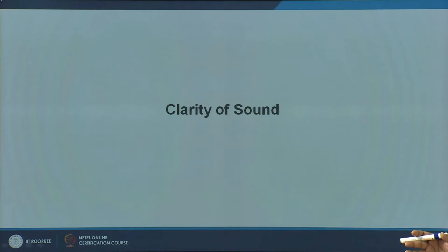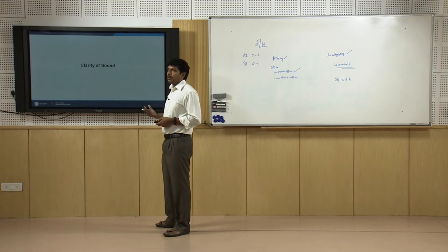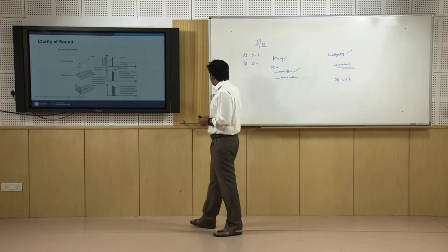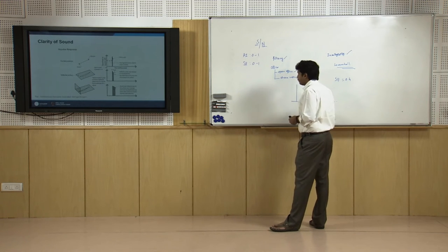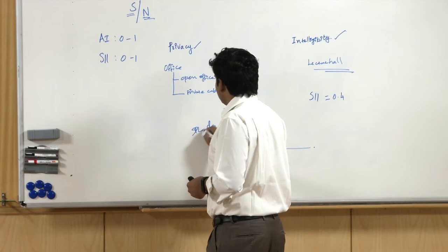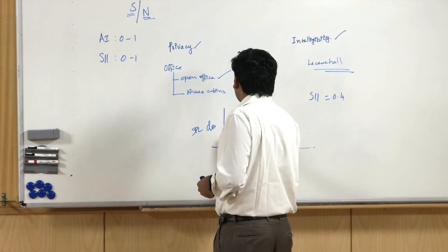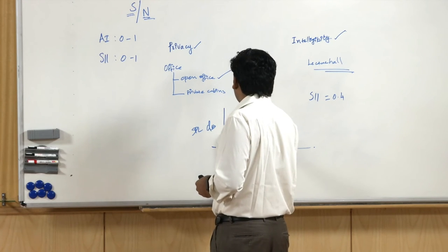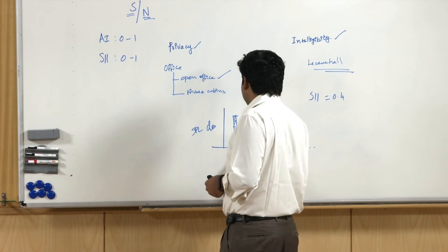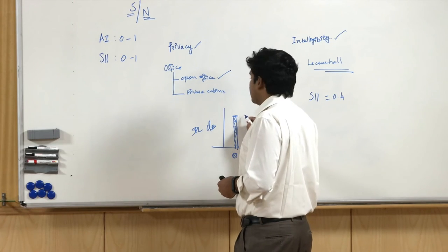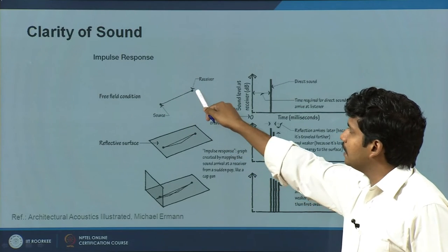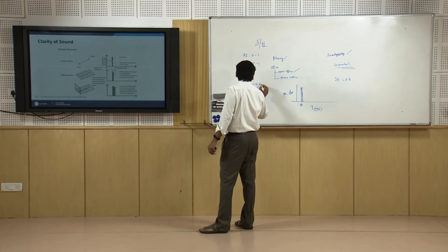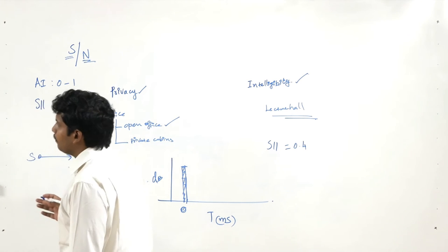Let us look at clarity of sound. These terms have a lot of meaning in acoustical design. On the x-axis we have time in milliseconds, and on the y-axis sound pressure level in decibels. Imagine an impulsive sound — a firecracker — at time 0 milliseconds. The direct sound travels from source to receiver and arrives first. Then reflections begin: the first reflection from the floor, then the ceiling, then side walls, and eventually the rear wall.